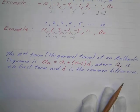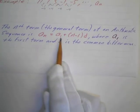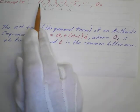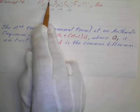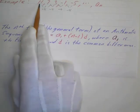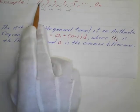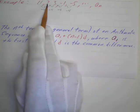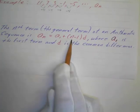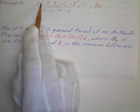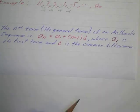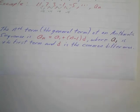The nth term, or general term of an arithmetic sequence, is given by the formula: a sub n equals a sub 1 plus n minus 1 times d, where a sub 1 is the first term and d is the common difference. To get the second term, we add one common difference. Using our last example with first term 11 and d equals negative 4: a sub 2 equals 11 plus (2 minus 1) times negative 4, which is 11 plus negative 4, giving 7. For the third term: 11 plus 2 times negative 4 equals 3. The formula makes intuitive sense.